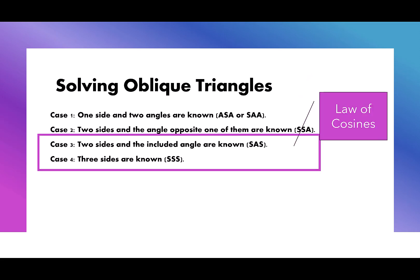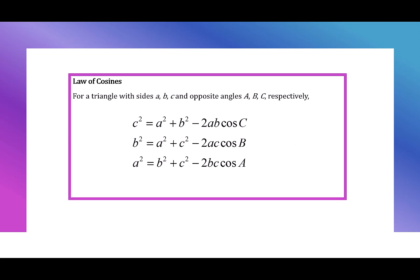We're going to use the law of cosines when we have side-angle-side or side-side-side. For a triangle, sides a, b, and c have opposite angles capital A, capital B, and capital C respectively, and we have three equations.